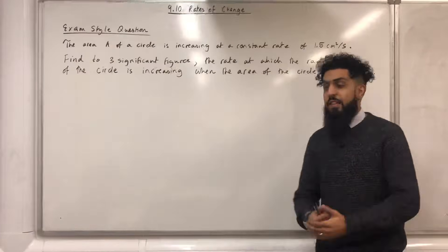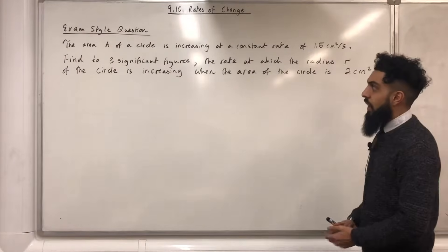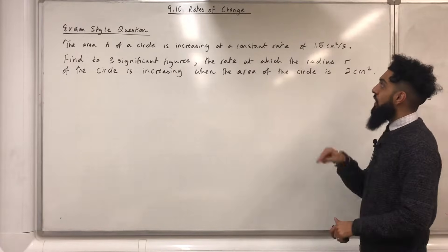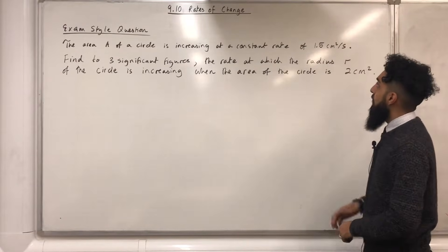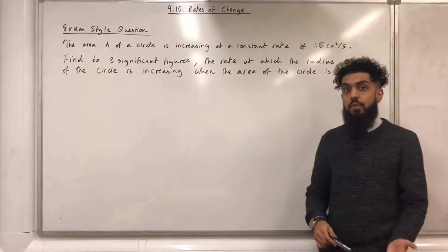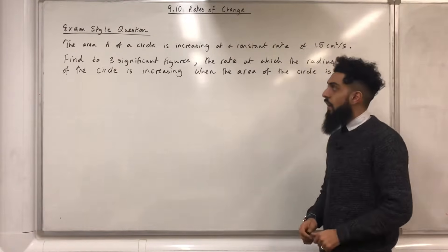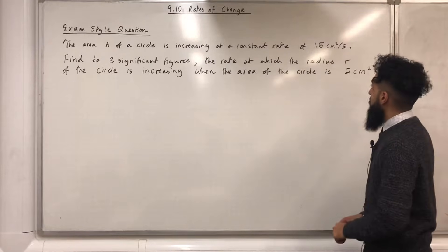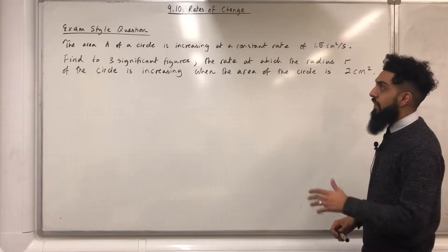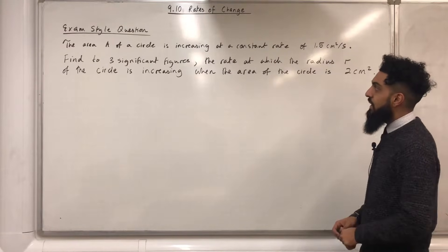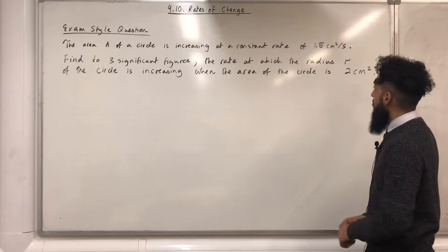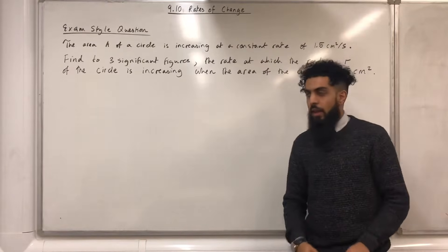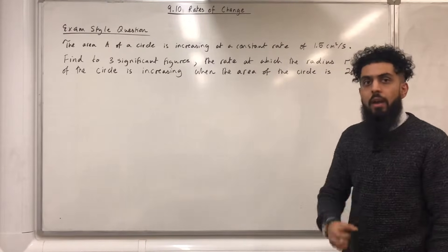Here's another exam-style question. The area A of a circle is increasing at a constant rate of 1.5 centimeters squared per second. Find, to three significant figures, the rate at which the radius r of the circle is increasing when the area of the circle is 2 centimeters squared.